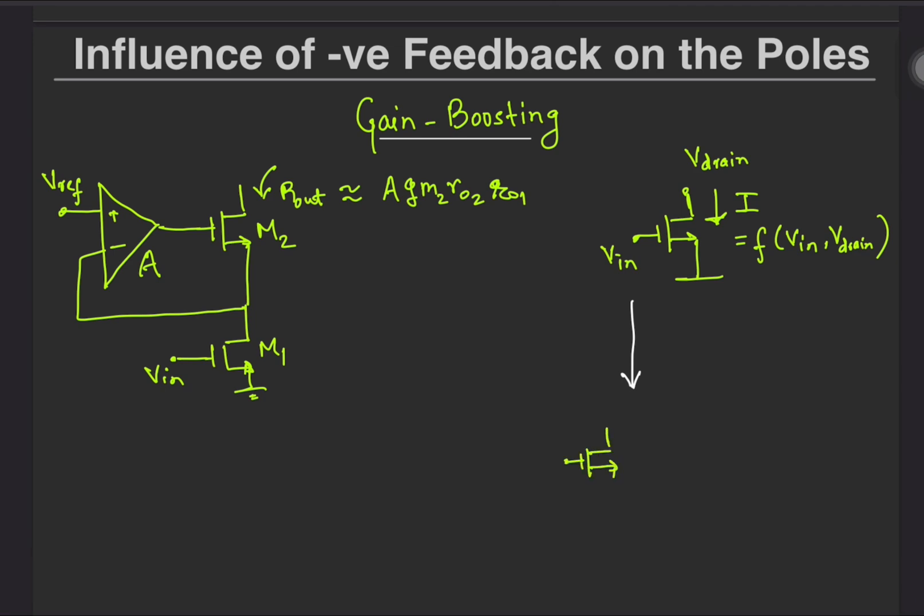So the next intuitive thing to do was to shield its drain by means of a simple current buffer which is a common gate stage. The hypothesis was that the cascode device shields the drain voltage of the main current source and thus keeps the current relatively constant. Note that we need to bias the cascode such that the difference of the bias voltage and Vgs of M2 remains constant.